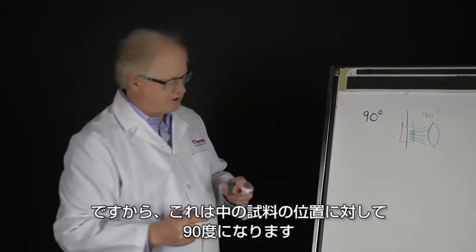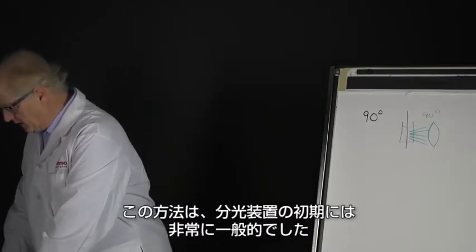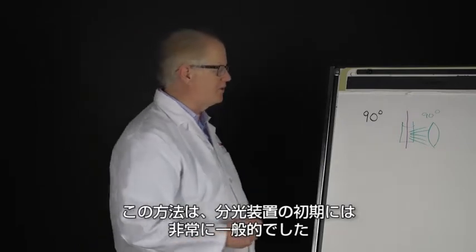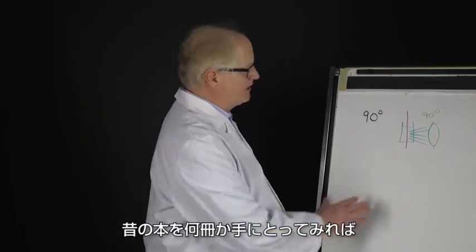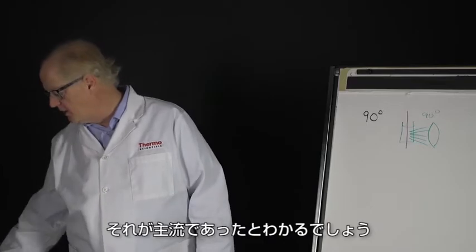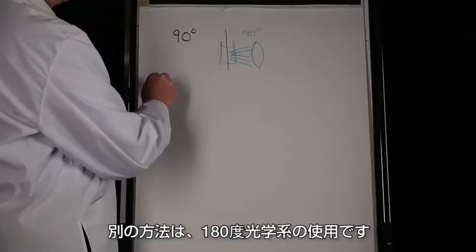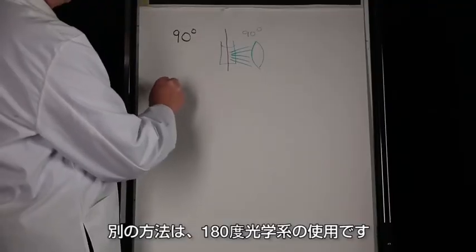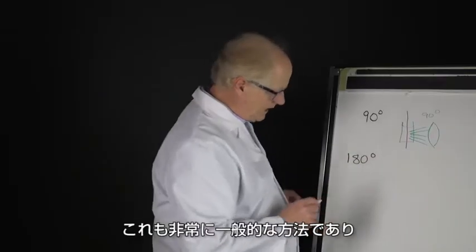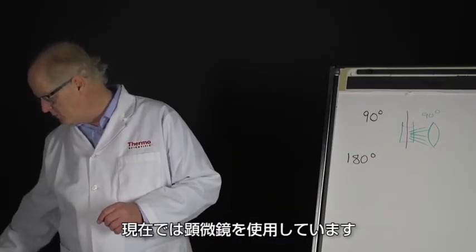That was very common in the early days with spectrometers. If you go back and look at some of the historical books, that's the way you'll see things done. But another way to do this is using 180-degree optics, and that's the other most common configuration nowadays.